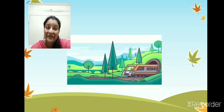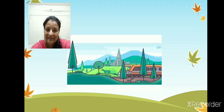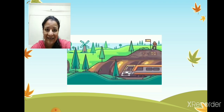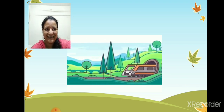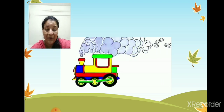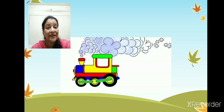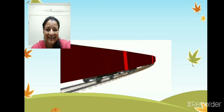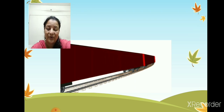Next, we have the train. Now, where does a train move, children? On the rails. It is a land transport, but it moves on the rails. Can you see the rails? Yes. Next, the engine — the engine also moves on the rails. We need to go to the platform, the railway station, to board a train. It runs on the rails. This is a rail — can you see the rails here? A train and an engine move on the rails.